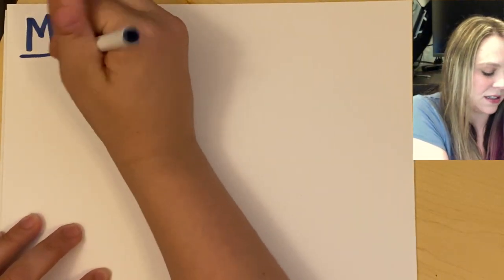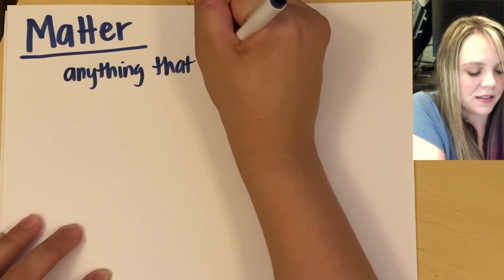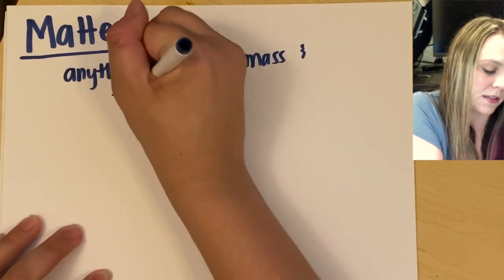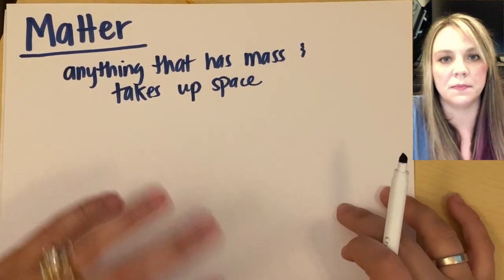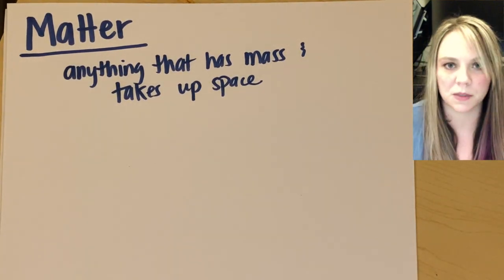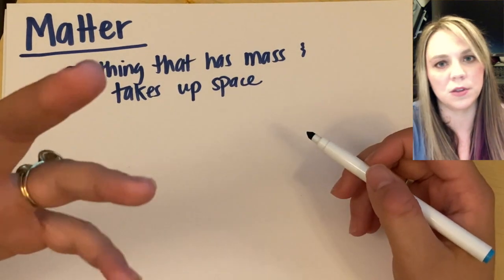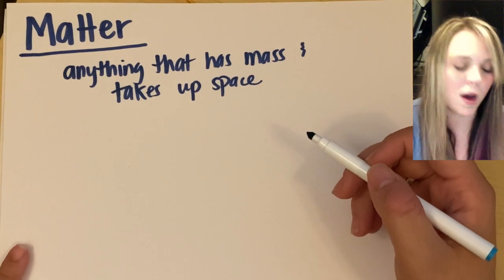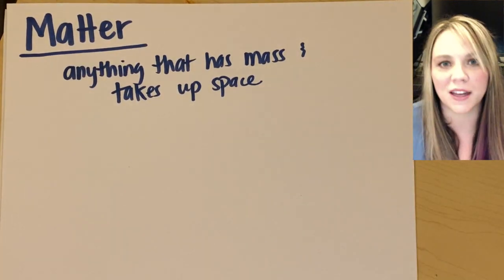Matter is anything that has mass and takes up space. So you have to have a mass, you actually have to be something, and you have to take up space. Examples would be anything that you can see with your eyes, right? The computer that you're looking at, the phone that you're holding in your hand, the wobbly kids table that you are working on right now. Whatever, all of that is made up of matter.